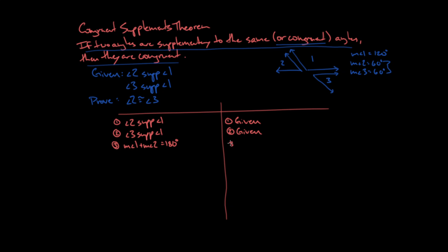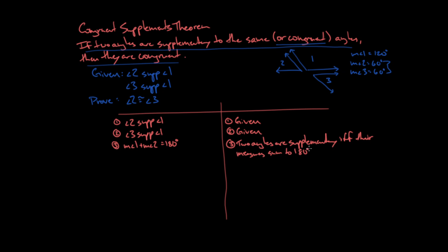The definition of supplementary is that the two angles sum to 180 degrees. So statement 3: the measure of angle 1 plus the measure of angle 2 equals 180 degrees. Even without thinking ahead, nine times out of ten if something is given as supplementary, I'll end up saying their measures sum to 180 degrees. The reason is: two angles are supplementary if and only if their measures sum to 180 degrees, from statement 1.